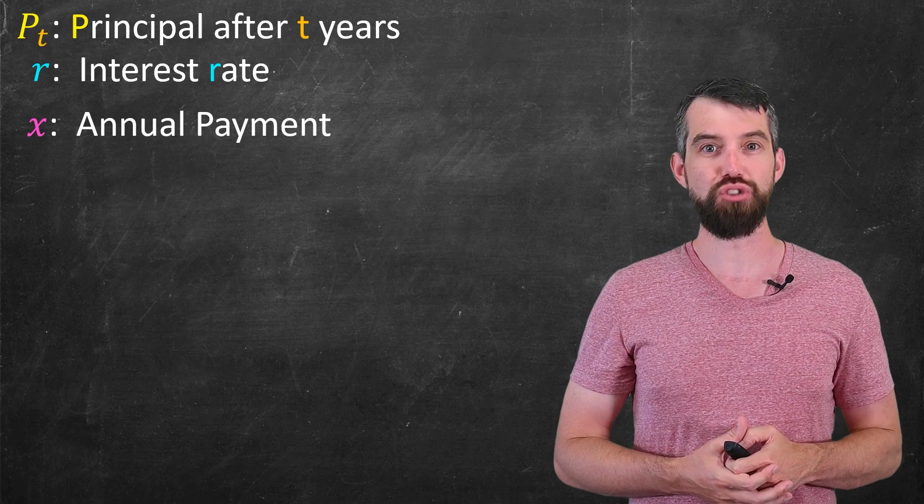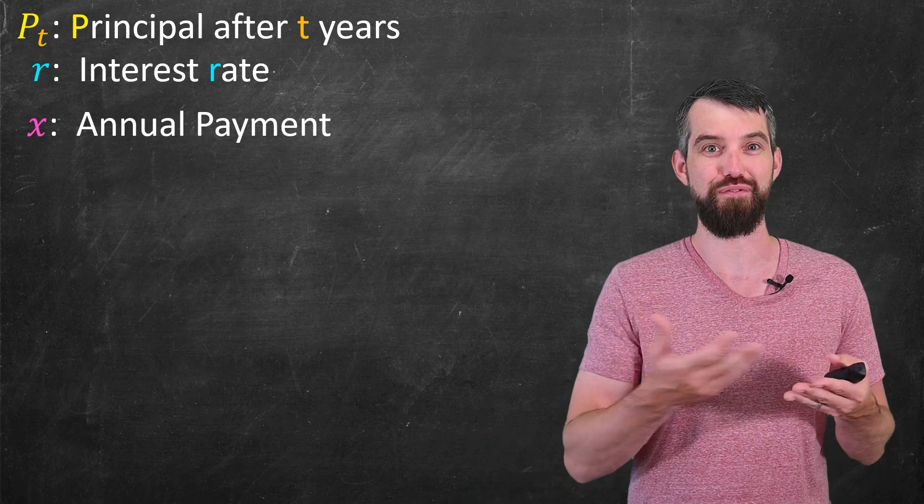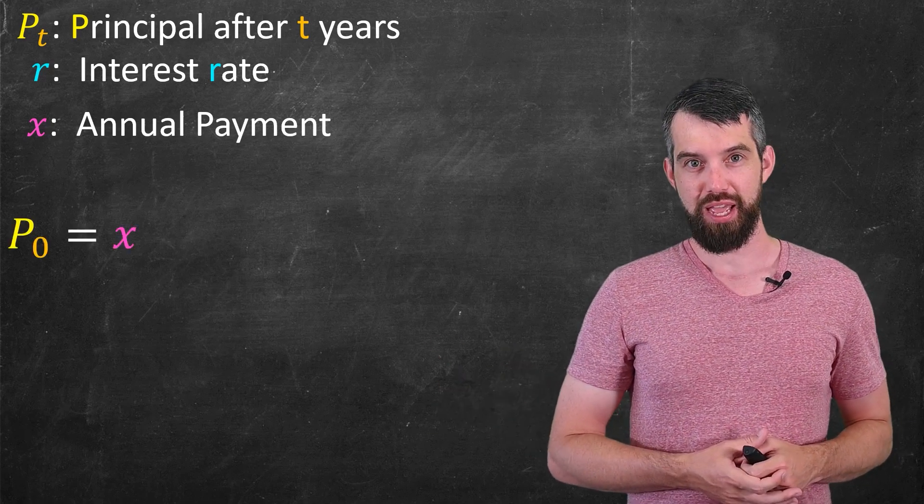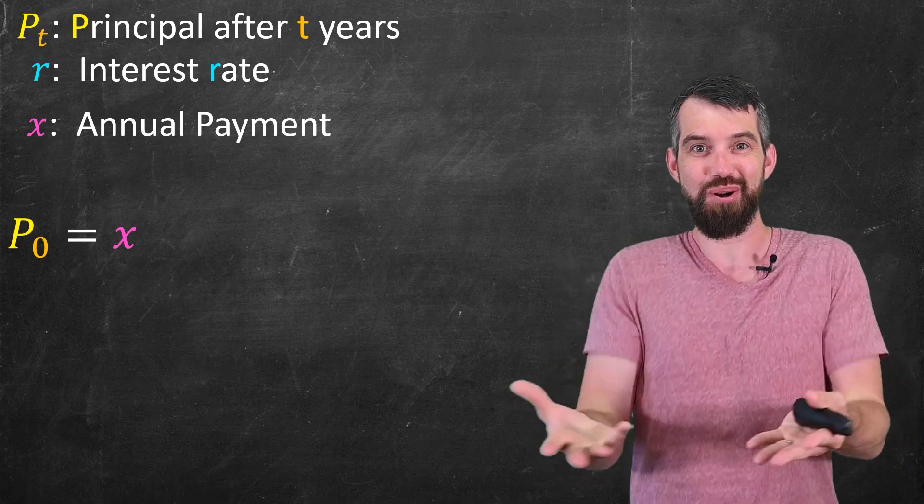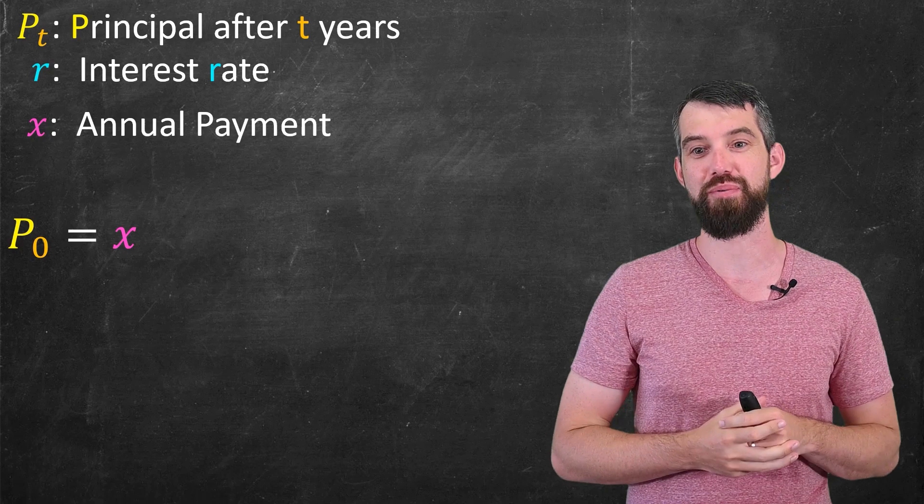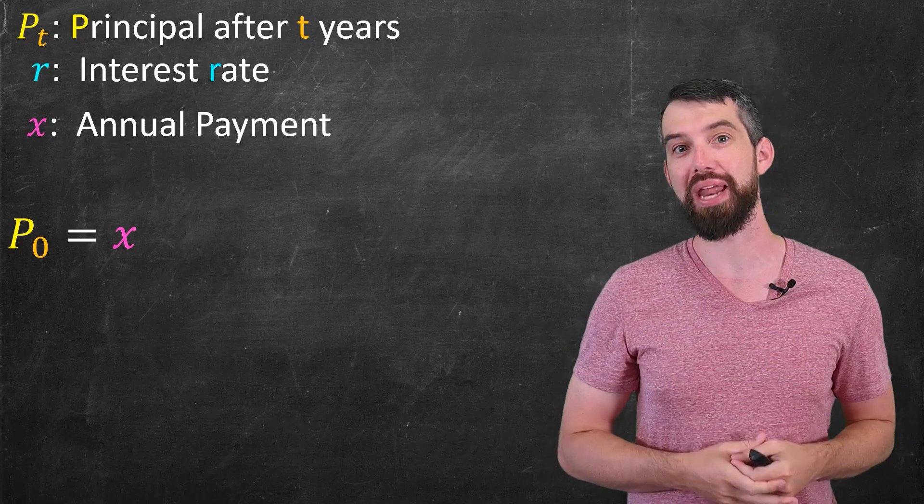Okay, so let's try to figure out what a formula for P_t is going to be, my formula for my principal after t years. Well, I can do the first of them pretty simply. If I do what's P after 0 years, my idea is that I'm going to make one payment right now, my first annual payment right now. So at the beginning, all I have is x. P_0 is just equal to x.